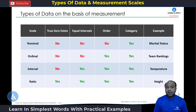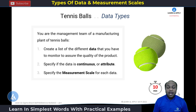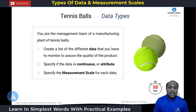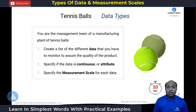With these examples and explanations, we have completed the learning for this topic. But I have one exercise for you. Please complete this exercise by setting a timer of 10 minutes. Imagine you are the management team of a manufacturing plant for tennis balls. First, create a list of the different data types you need to monitor to assure product quality. Second, specify if the data is continuous or attribute. Third, specify the measurement scale for each data. Please put your exercise answers in the comment box.